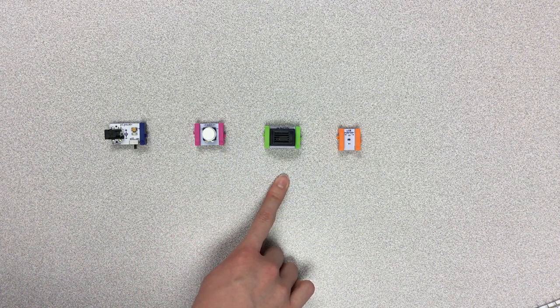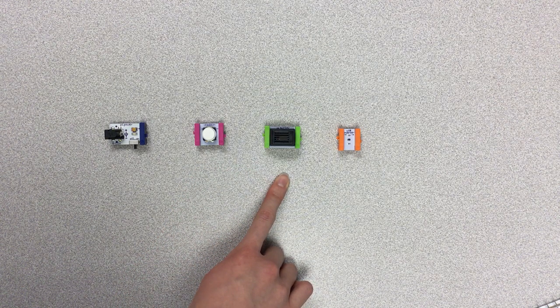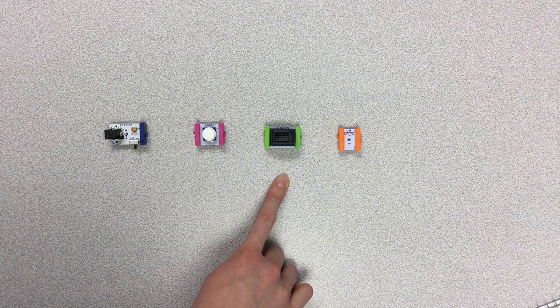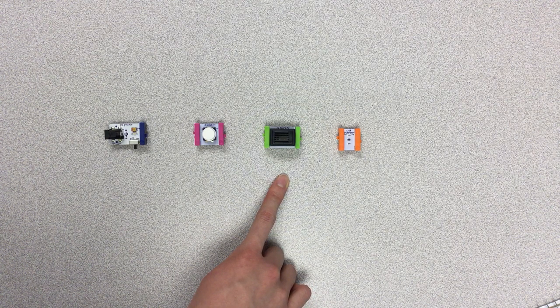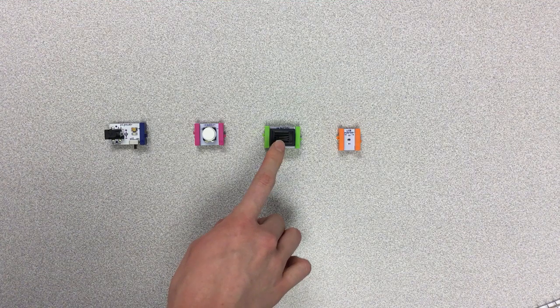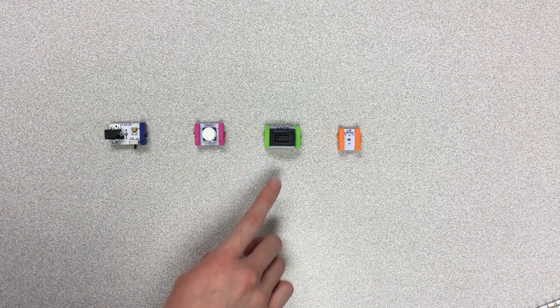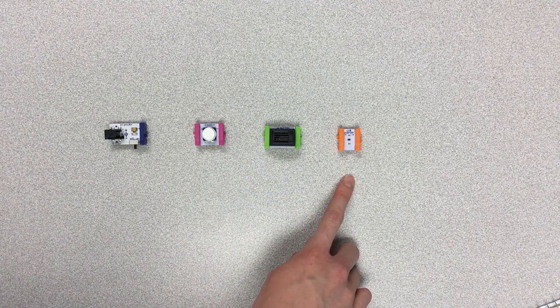Then you have your green bits. Your green bits are outputs. They do something: they light up, they move, they make a sound. In this case, this one's a buzzer, so it's gonna buzz. Then we got our orange bits.